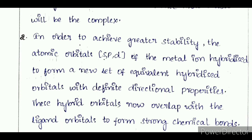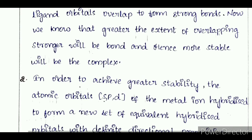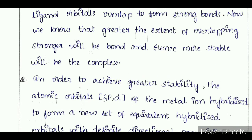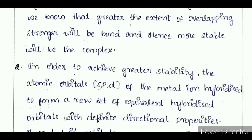In order to achieve greater stability, the atomic orbitals — S, P, and D — of the metal ion hybridize to form a new set of equivalent hybridized orbitals with definite directional properties.